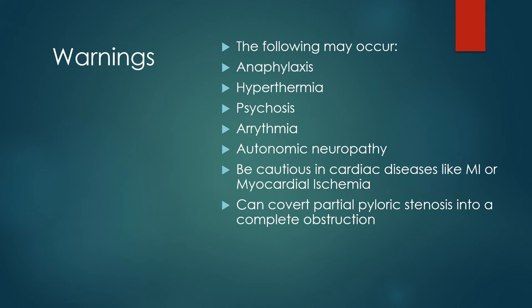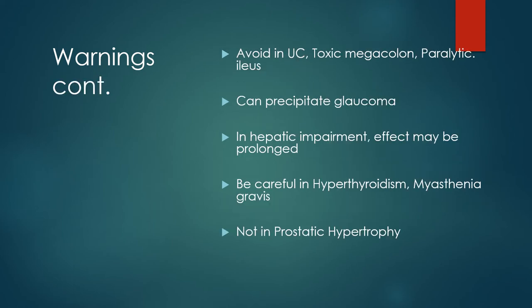We have to be cautious in cardiac diseases like myocardial infarction or myocardial ischemia. If dealing with bradycardia involving myocardial infarction, atropine can actually worsen the situation as it can itself cause myocardial ischemia. In the pediatric age group with partial pyloric stenosis, administering atropine can convert partial pyloric stenosis into complete obstruction. We should also avoid atropine in osteocolitis, toxic megacolon, and paralytic ileus.